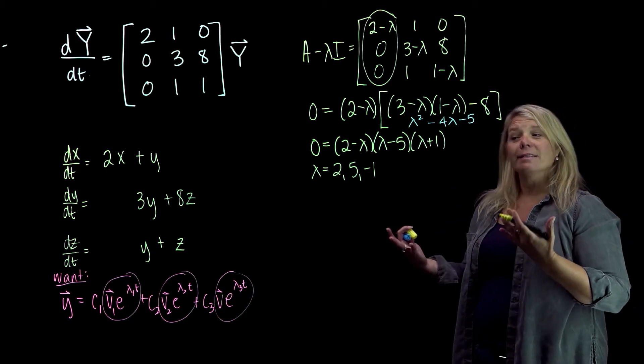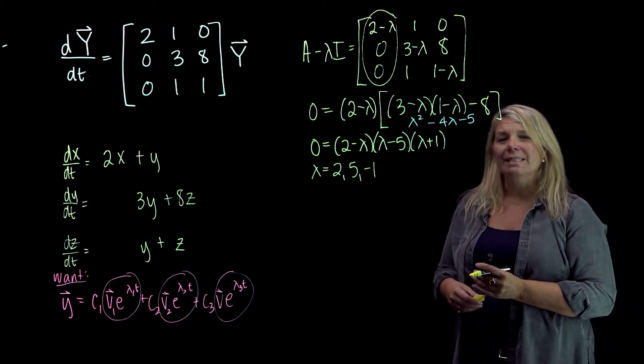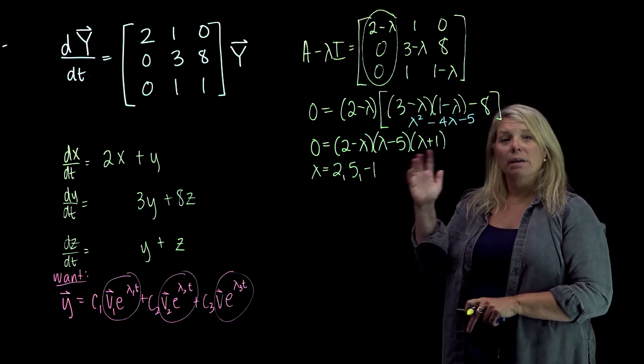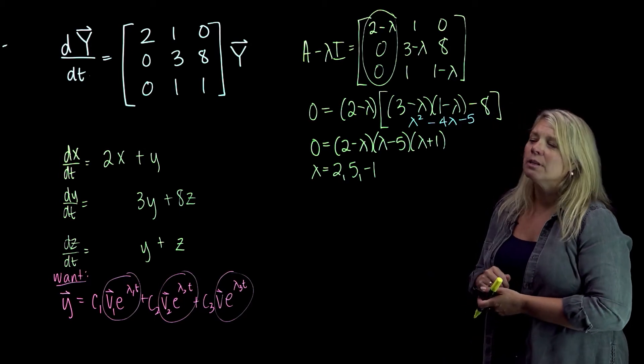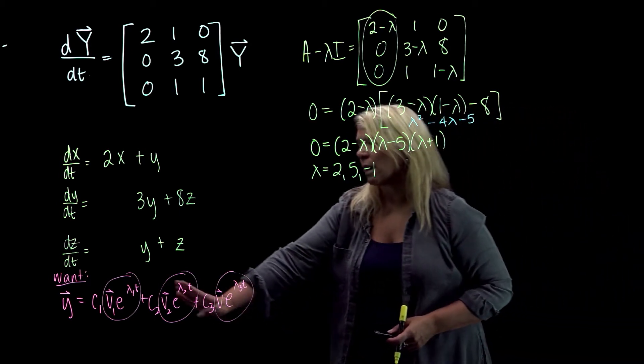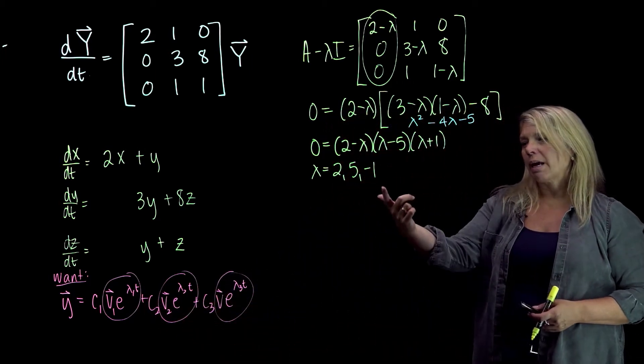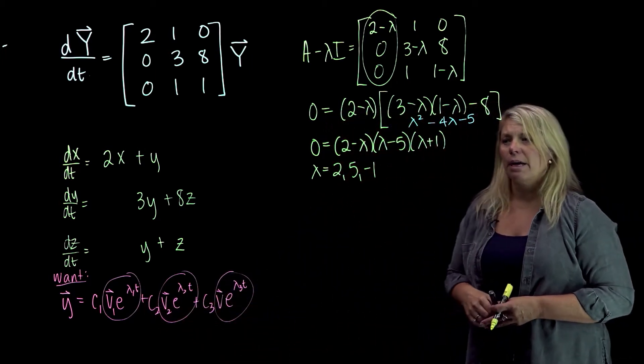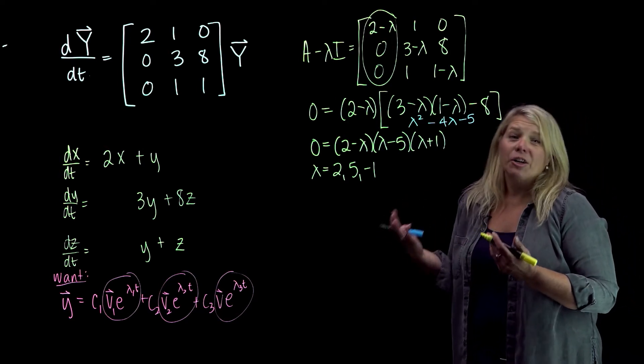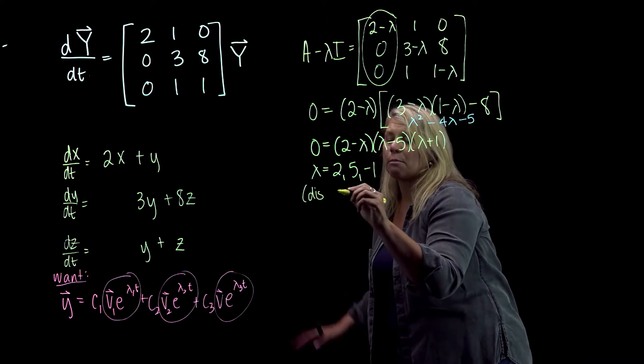And this is an easy problem, relatively speaking, because I have three distinct, so different, real eigenvalues, so not involving imaginary numbers. So it's pretty straightforward. I should expect that I should be able to get solutions of this form, where my lambda 1, lambda 2, and lambda 3 are 2, 5, and negative 1. Alright, so that's good, where I've got distinct real eigenvalues and the right number of them.